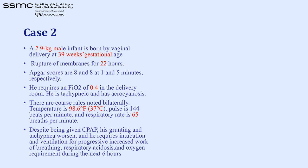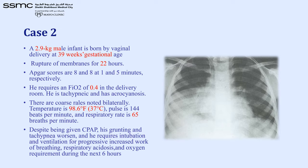Case 2: A 2.9 kg infant at 39 weeks with rupture of membranes for 22 hours; Apgar scores were fine. The baby required 40% oxygen. Temperature 37°C, respiratory rate 65. Despite CPAP, the baby still had grunting, required intubation, and developed respiratory acidosis. The X-ray pattern is consistent with pneumonia.